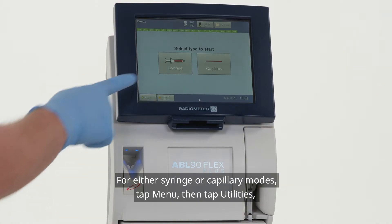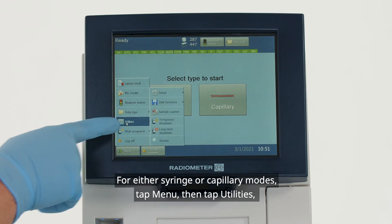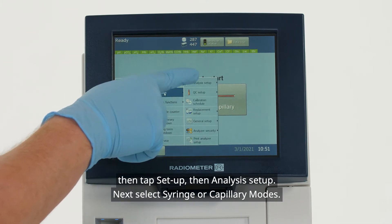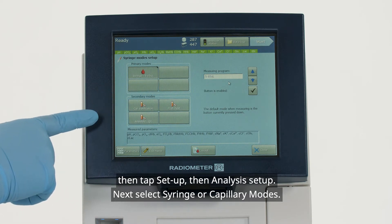For either syringe or capillary modes, tap Menu, then tap Utilities, then tap Setup, then Analysis Setup, and next select Syringe or Capillary Modes.